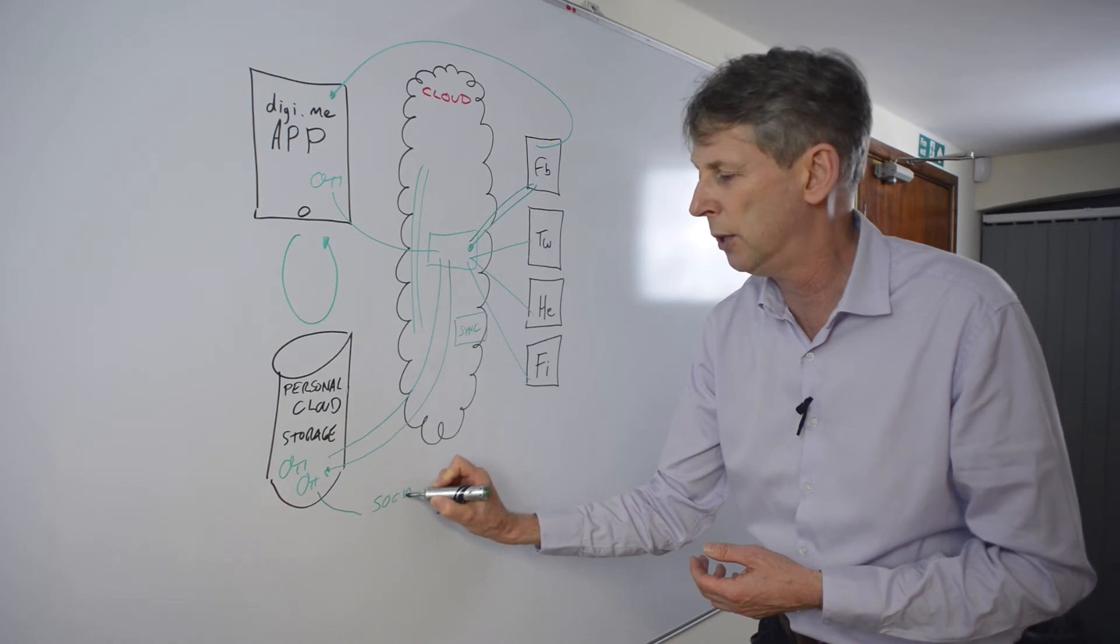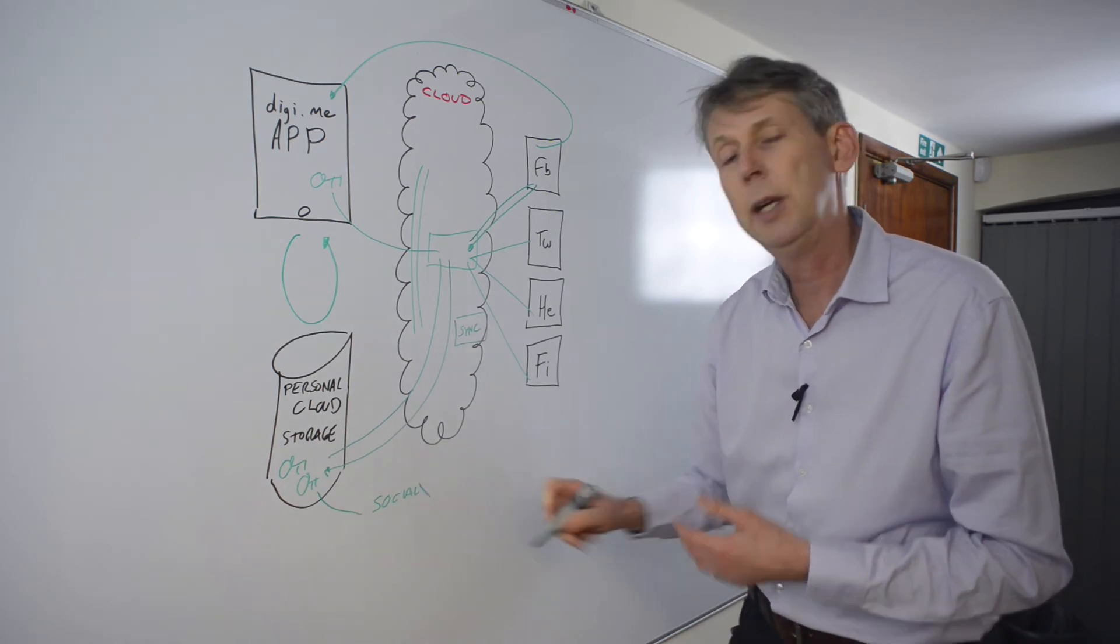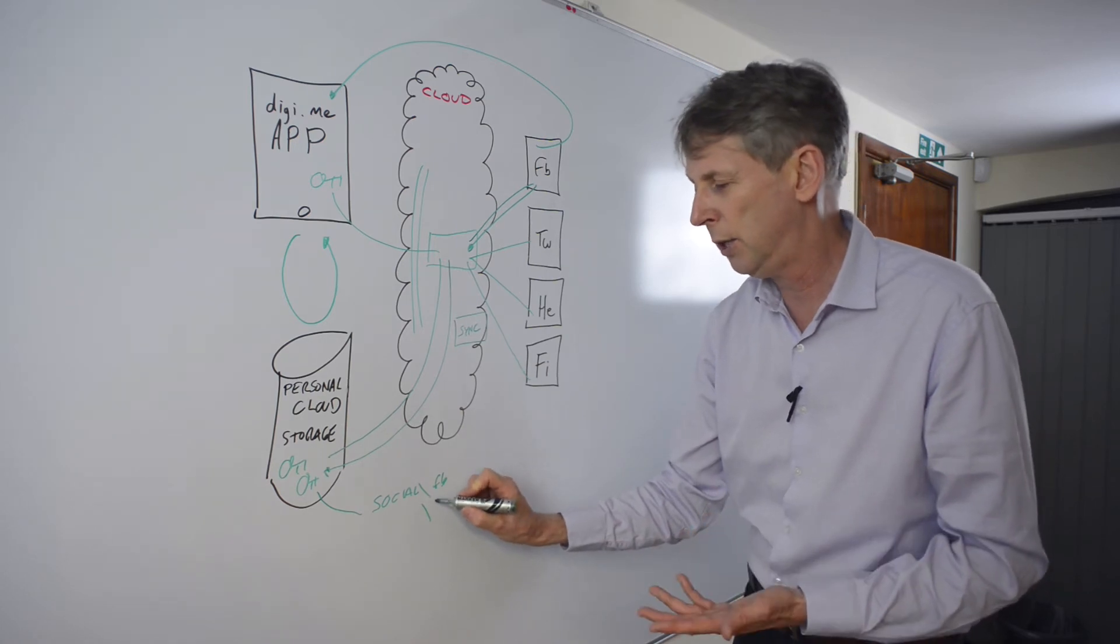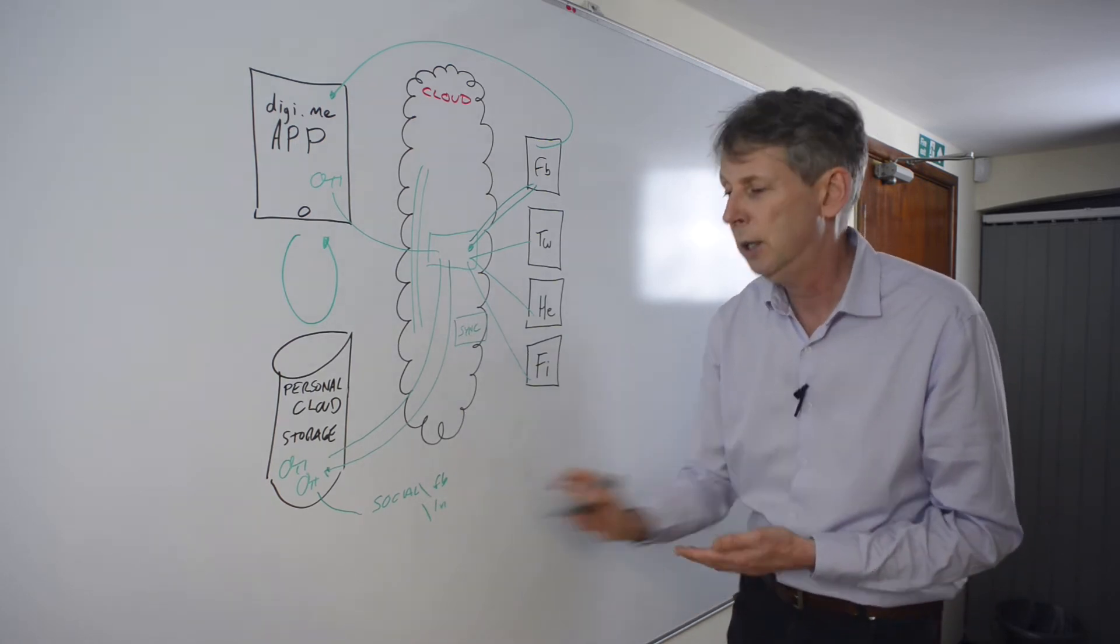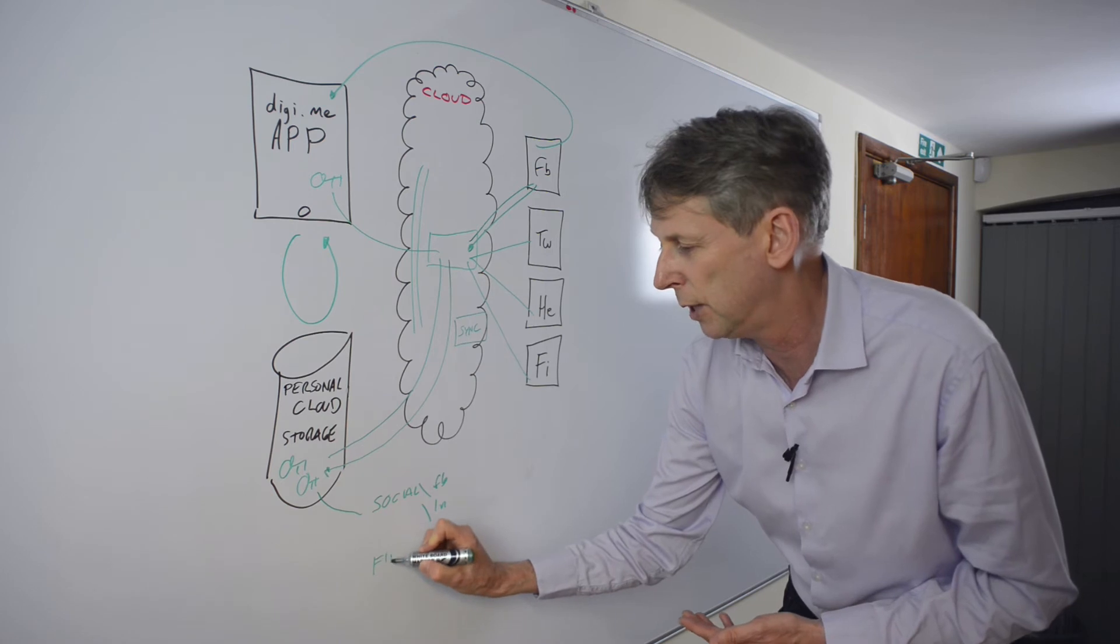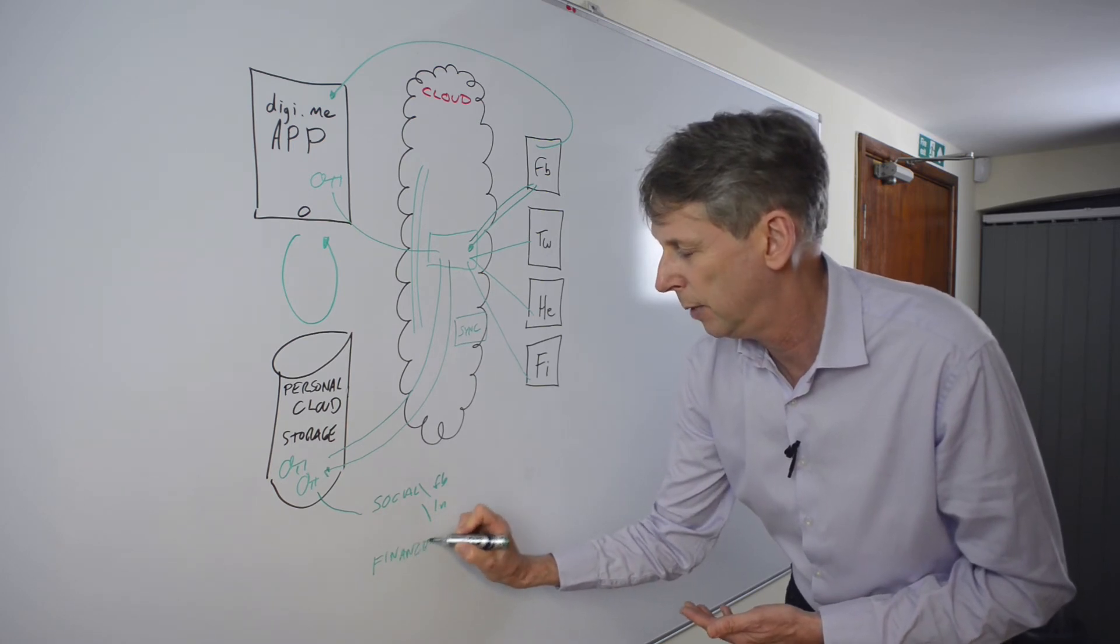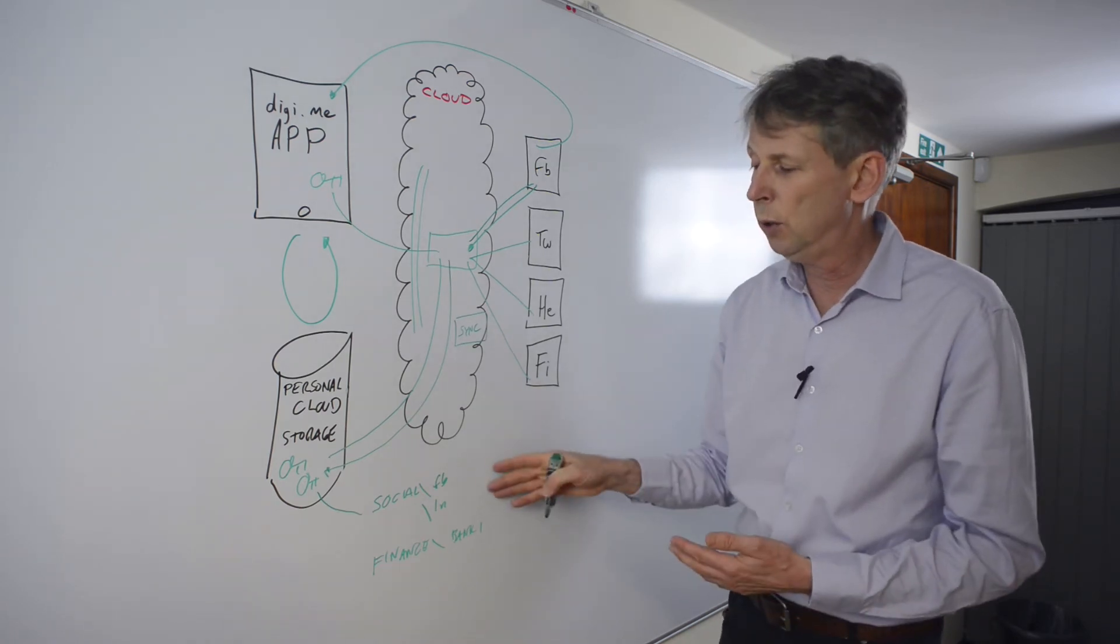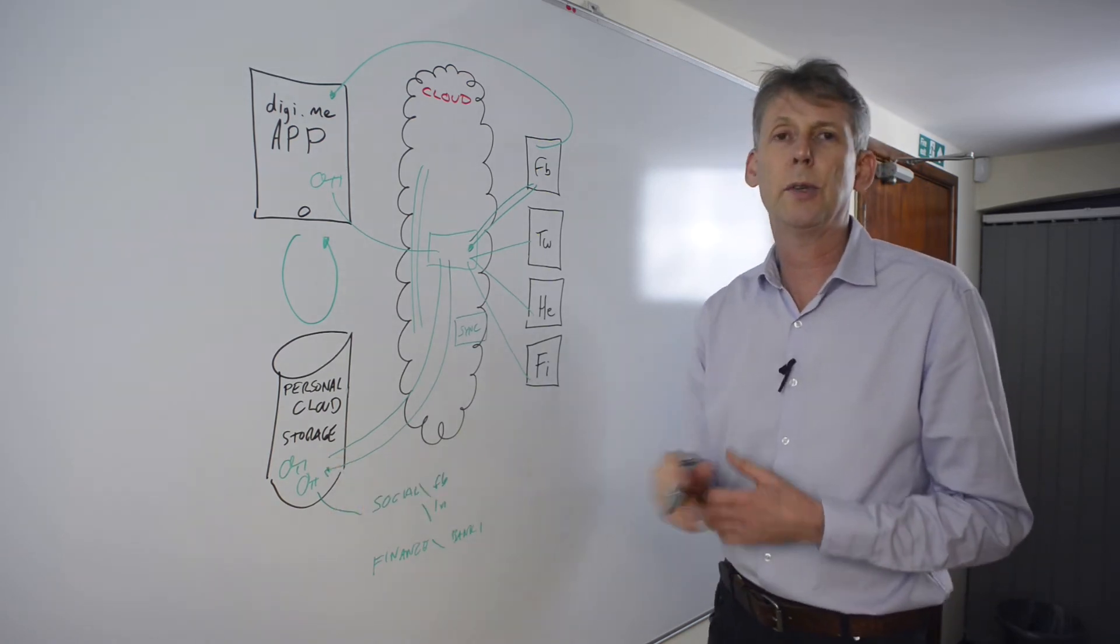And the way we do it is we actually store and categorize it. So for instance whenever we store social data we categorize it, and if we put Facebook in we know Facebook, if we store Instagram we separate that and so on. If we were to add finance data and we add bank one or we add any other sources, all of that data is stored in the user's storage.